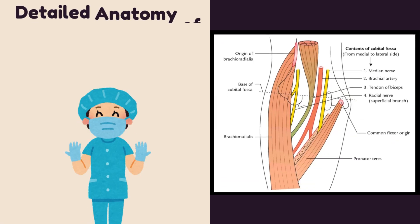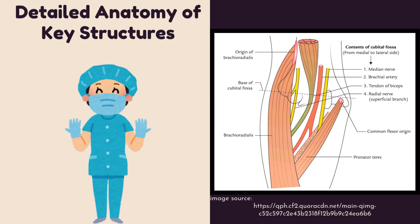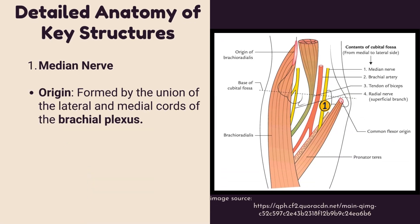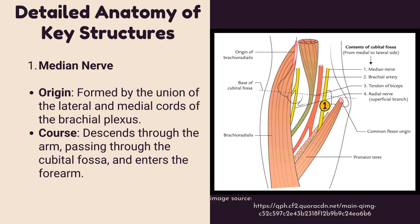We will now discuss the detailed anatomy of key structures. The median nerve — origin: it is formed by the union of the lateral and medial cords of the brachial plexus. Course: it descends through the arm, passing through the cubital fossa, and enters the forearm.